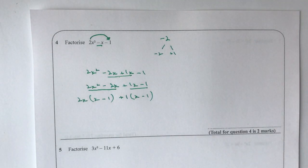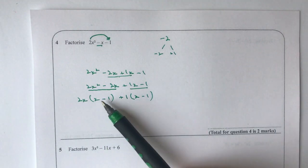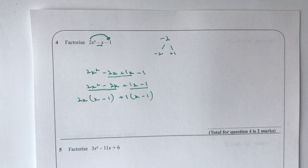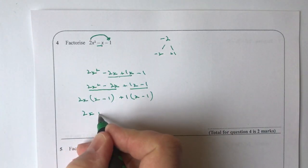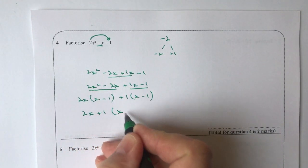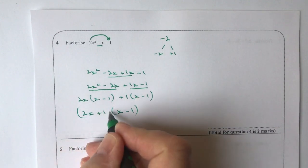So hopefully you can see now that what I've done is created this situation where this term and this term are common, so therefore I can now rewrite this as 2x plus 1 multiplied by x minus 1 and put that in brackets.